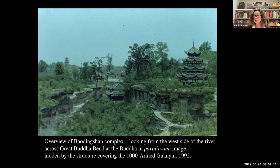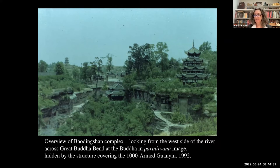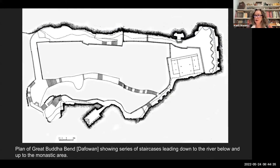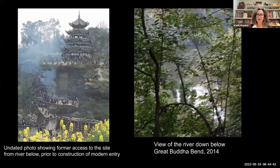Taking a broad view, it's important to look first at location and materials. Both of these will help answer questions related to text and image that come up later. Location is really important, as it will drive who uses a site and why a site is built in the first place. Baudingshan is perched up on a hill above a meander that develops into a rocky oxbow. Access to Baudingshan in the 12th century most likely was both by land and water. Here's the plan of Great Buddha Bend, Dafa Wan, showing staircases leading down to a river, and the view of the river below with access coming up from below.